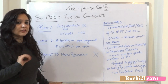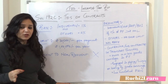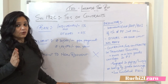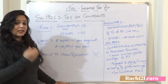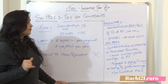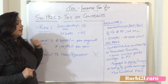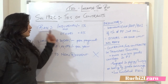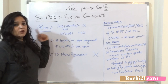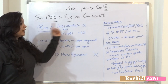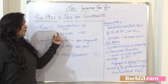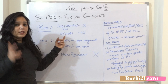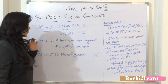What are the limits? This is a very important section because many questions are asked from this section. Please pay attention as there are many limits in this. The rate of TDS to be deducted: if it is an individual or a HUF, the rate will be 1%. If it is anyone other than individual and HUF, then it will be 2%.